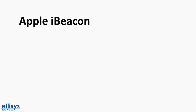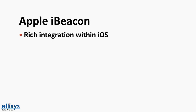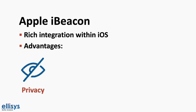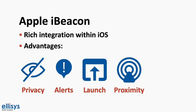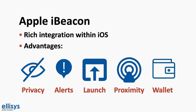The biggest advantage to using iBeacon is the rich integration within iOS. Some advantages include privacy controls, alerts for apps that are running in the background, launching an app that has been shut down, regioning and proximity reporting back to the app using the ranging API, and finally displaying specific passes within the Wallet app in iOS based on proximity to specific beacons.